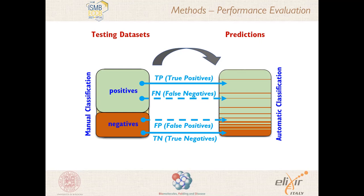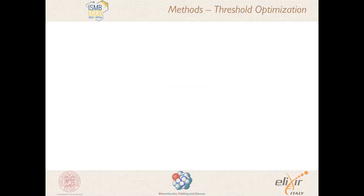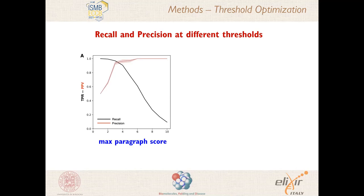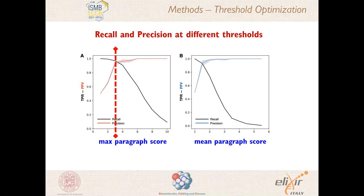In the next slide you can see how the threshold was optimized. Recall and precision values are plotted as a function of the threshold for the paragraph score. In particular, for each article we took the maximum paragraph score found in the whole article, and as you can see, the threshold which optimizes both recall and precision can be set around three. We also drew a similar plot taking the mean across all paragraph scores of a given article; however, the best scoring system turned out to be the maximum paragraph score.